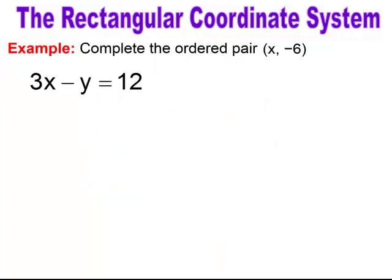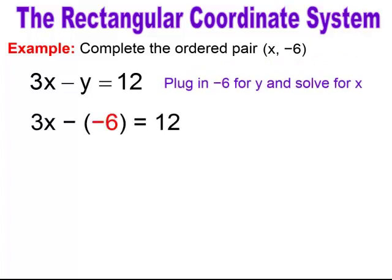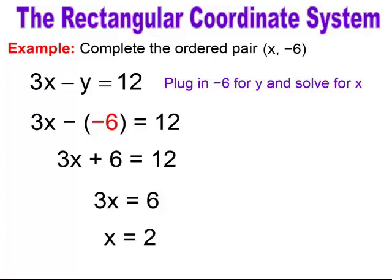When we're asked to complete an ordered pair, you're using evaluation to solve for the missing variable. An ordered pair is always an X-value first and then a Y-value. In this case, I'm given a variable in the X-spot and a value for Y. To find X, I substitute the given Y into the equation. Be careful because we have a minus Y, which creates a double negative since the value given is negative 6 — so that double negative changes to a plus, and I have a two-step equation. I subtract 6 first, then divide through by 3, and my X-value would be 2.